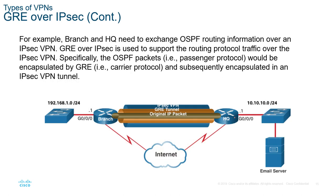The overall concept is: we have the internet, we build a GRE tunnel through the internet, and through that GRE tunnel we allow an IPSec VPN to build. The information going through the IPSec VPN is what is secured — the GRE tunnel itself is not secure; the IPSec portion is what provides security.